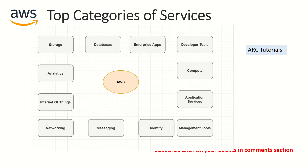Looking at the top categories of services, I've put together a simple diagram showing how AWS is spread across different categories — not just one. AWS helps you cater to computing, serverless, storage, enterprise applications, developer apps, identity management, networking, messaging, Internet of Things, and more. You name it and it's there. We'll explore and build on top of it, and you'll be able to deploy applications. It's an amazing journey we're going to cover together.